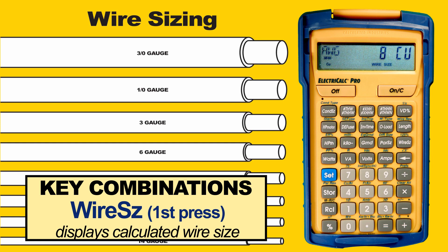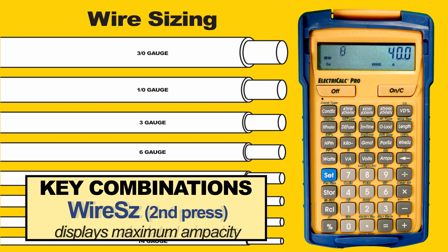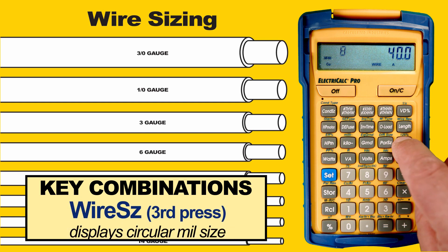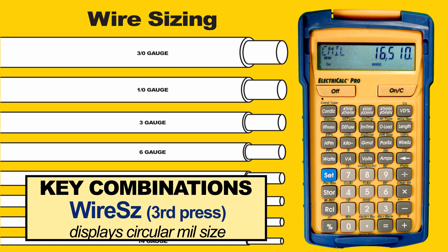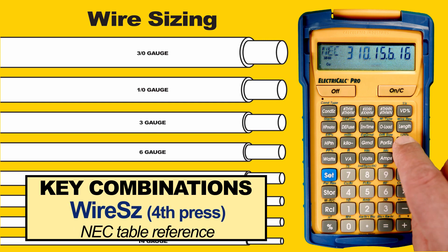It tells us that we will need an AWG number eight size copper wire based on these entries. Press Wire Size again and it displays the maximum ampacity that conductor wire size can carry based on the code rating. Press it again and you will see the circular mil size of that wire. The final press displays the table reference where the information came from.